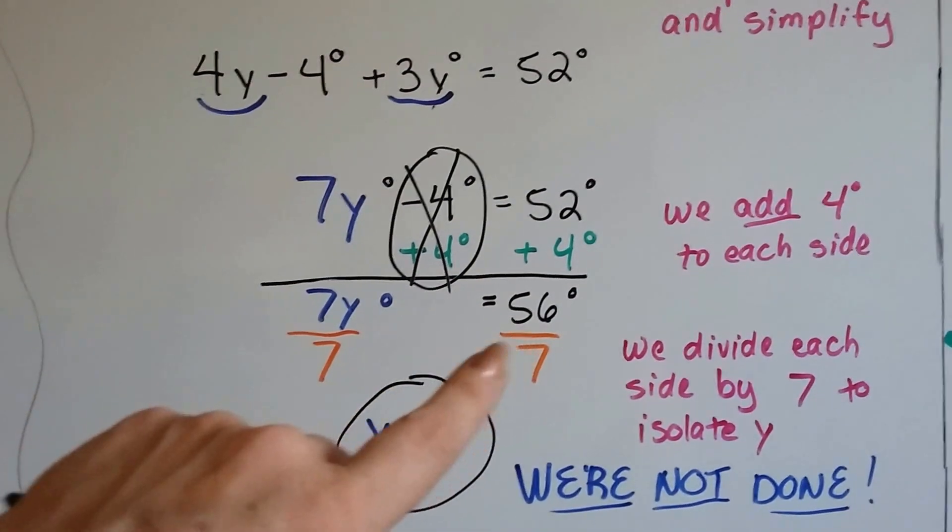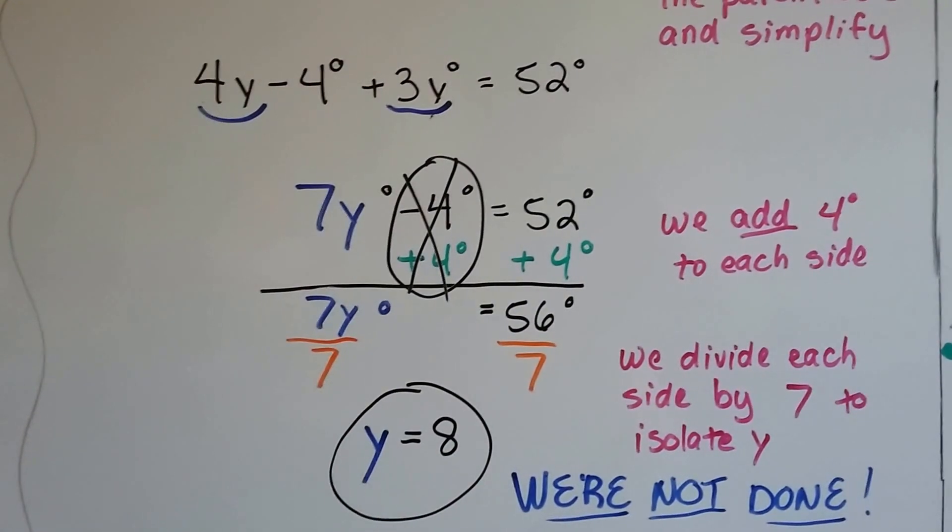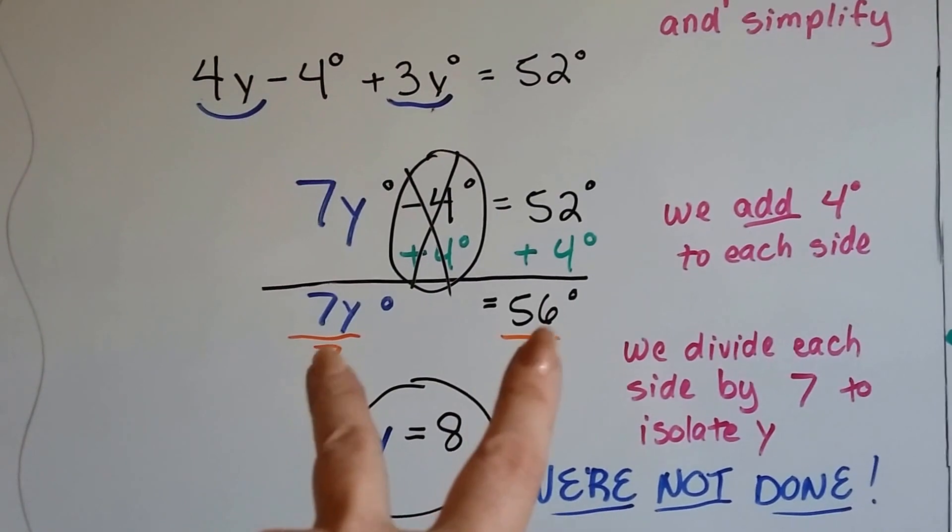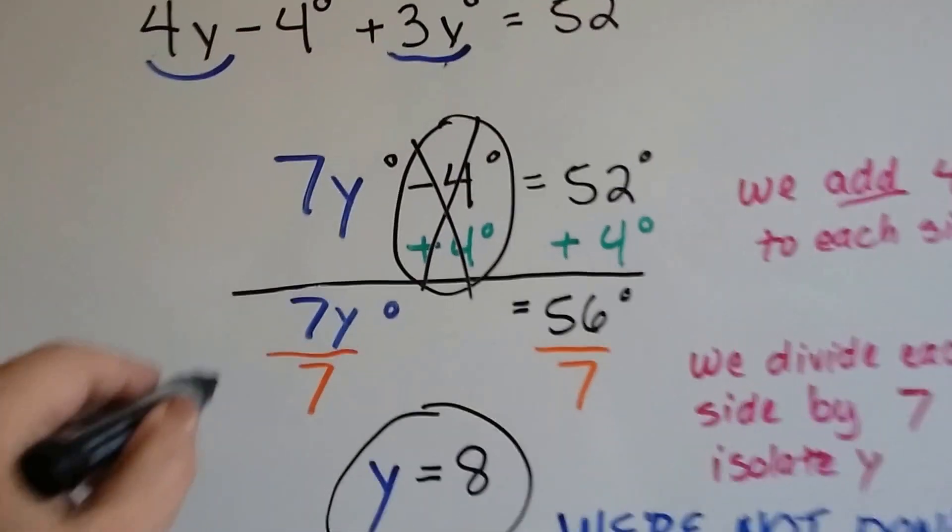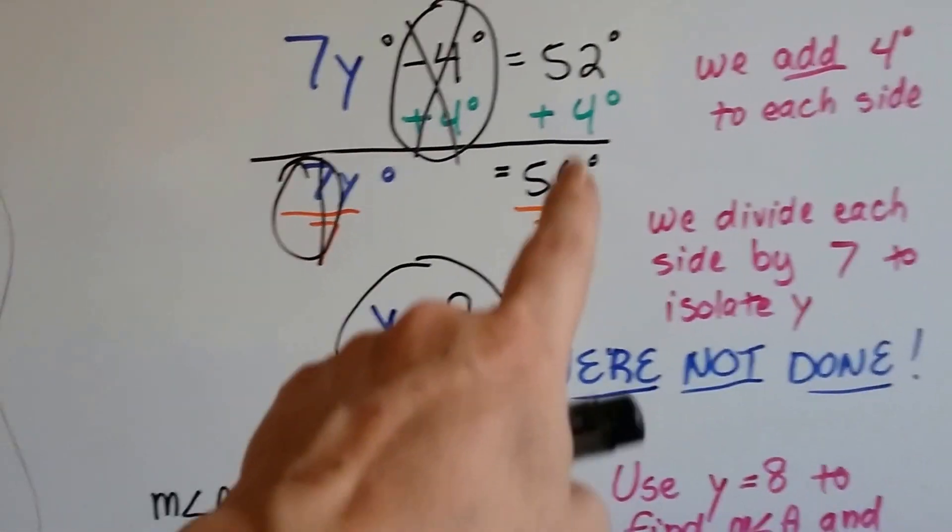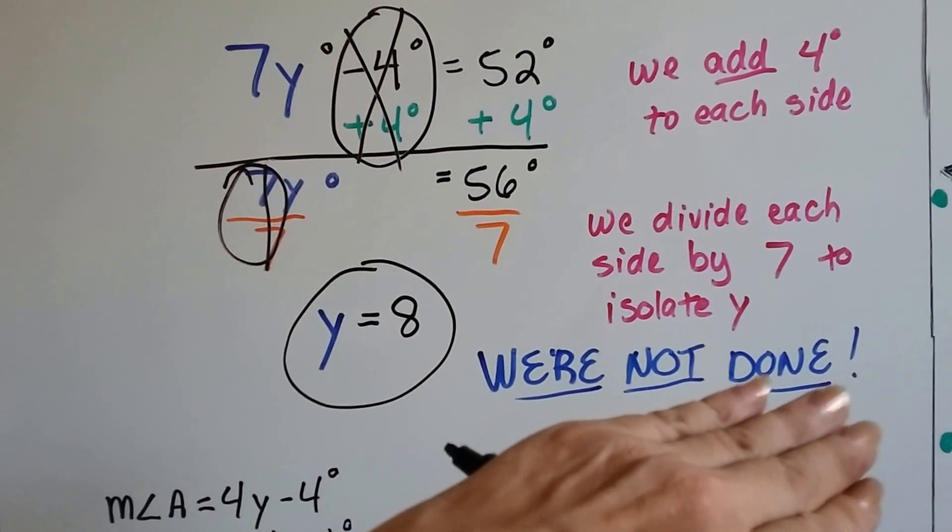So now to isolate y to one side, we need to divide each side by 7 because 7y is multiplication and we're doing inverse operations. The inverse of multiplication is division. So we divide both sides by 7. This gives us our buddy the invisible one, right? So the y just drops down. And 56 divided by 7 is 8. So y equals 8. But we're not done.